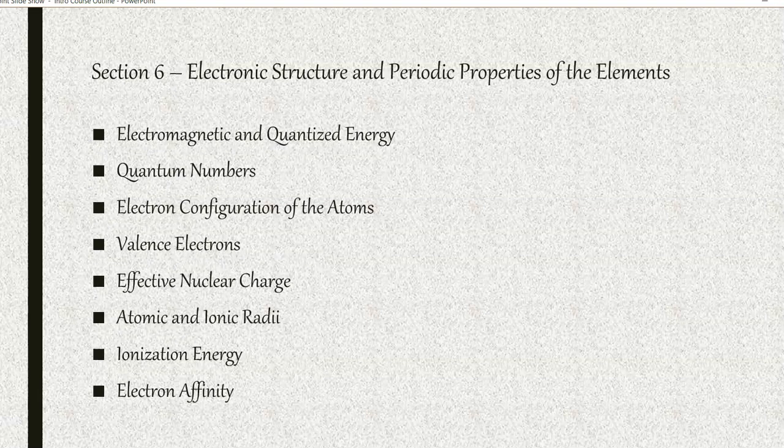Section six, we begin to look at the electron structure of the atom, and specifically the electron. We're going to start by looking at the electromagnetic spectrum, followed by the quantum numbers, and then introducing the electron configuration of the atoms. Valence electrons will be introduced here, and then we'll look at periodic properties of the elements from the periodic table. Effective nuclear charge is going to be introduced, and then we're going to be using that and other items to look at the atomic and ionic radii, ionization energies, and electron affinity.